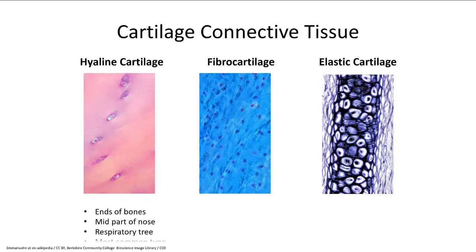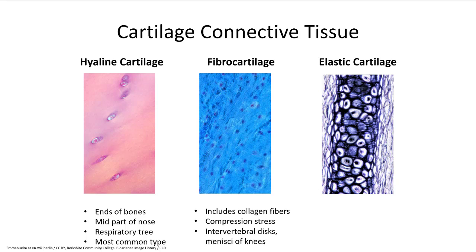Cartilage has three types. Hyaline cartilage is our most common cartilage — it's at the ends of all our bones, so arthritis is a hyaline cartilage problem. It also forms part of our nose and the rings of our trachea that you can feel running your finger down your neck. Fibrocartilage has strong collagen fibers and is found in our intervertebral discs and the menisci of the knee — it's meant to withstand a lot of weight and stress. Elastic cartilage has elastin fibers and is found in things needing more flexibility, like the ends of our nose and our ears.